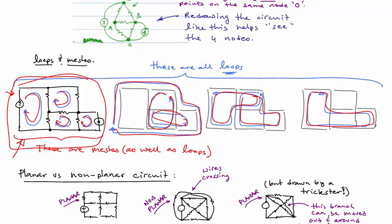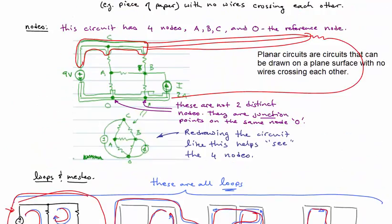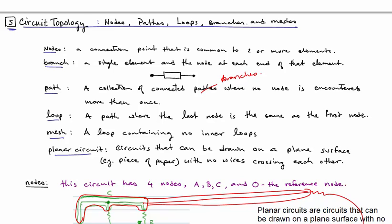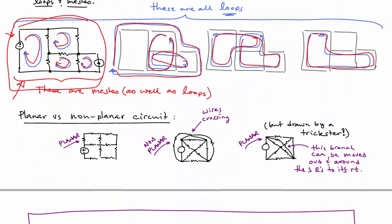Lastly, we want to describe what is called a planar circuit. This will be useful when we look at what's called mesh analysis. Planar circuits are those that can be drawn on a plane surface, in other words, a piece of paper with no wires crossing each other. And I have an example down here. So this is a planar circuit.